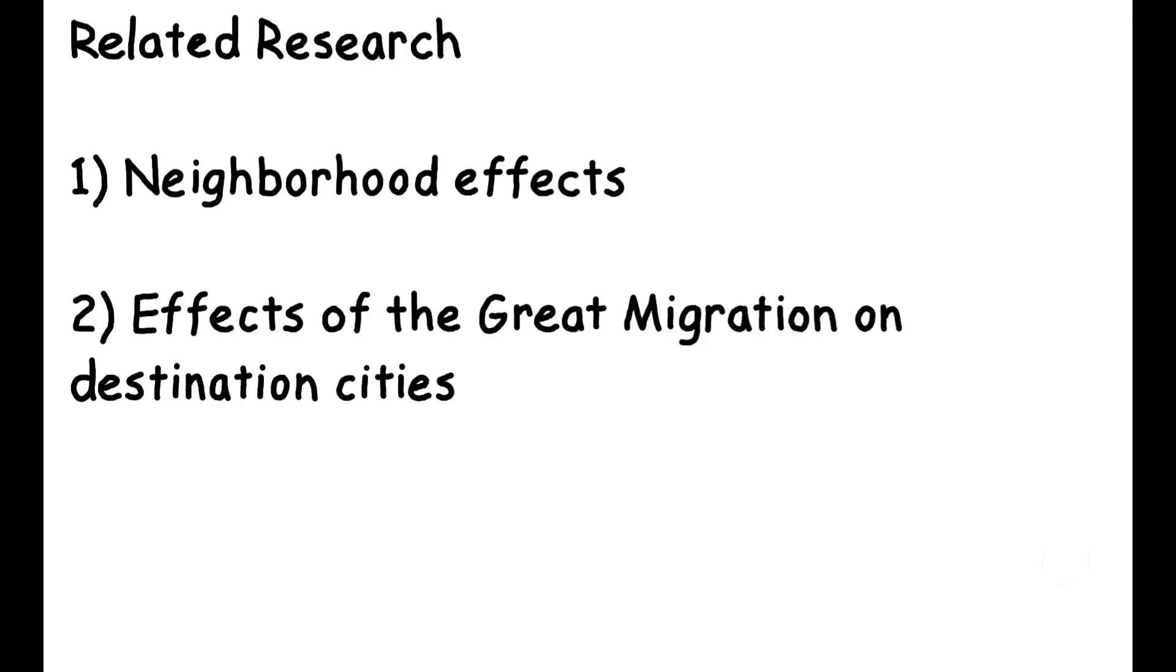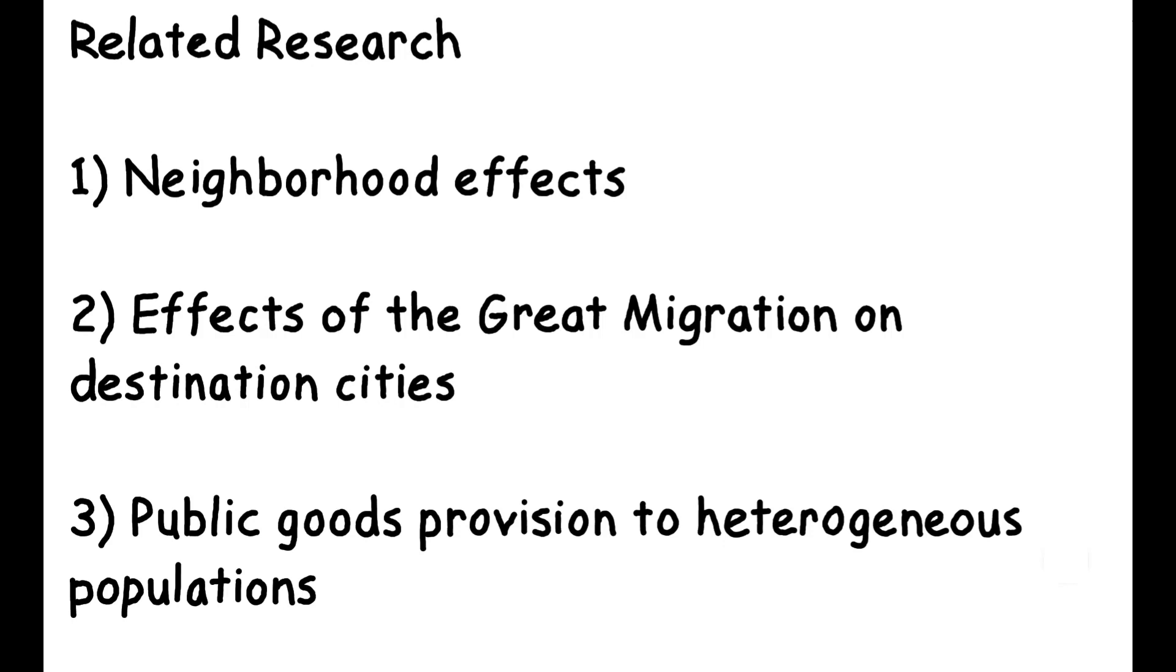If you would like to delve deeper into this topic, you can check out the full paper, as well as its references to other related research. These include many papers studying neighborhood effects and the importance of childhood location on adult outcomes, prior work examining the effects of the Great Migration on destination cities, and finally, a theoretical literature on public goods provision when there are diverse and heterogeneous constituencies.